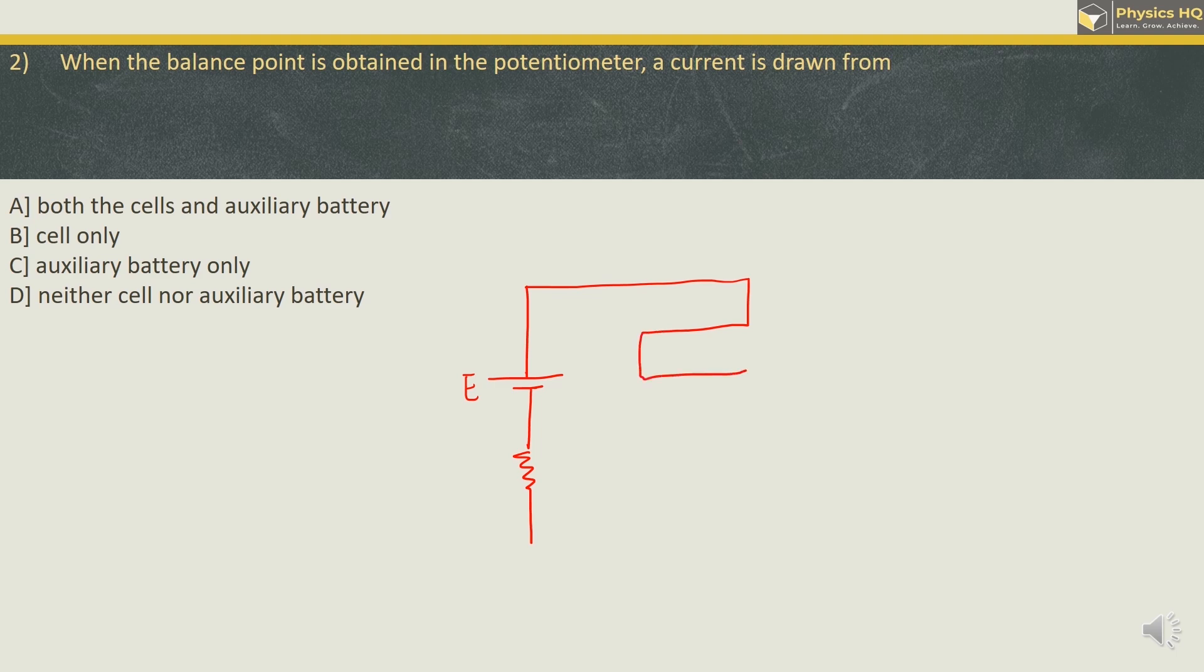Now let us say if we have connected a cell of EMF E1 over here and there is this galvanometer which shows the reading of current which detects the flow of current. And while moving the jockey, if we found the balance point over here, then the deflection in the galvanometer will be 0. Now if deflection is 0 means there is no current flowing from this path. And if there is no current flowing from this path means current is not drawn from this cell.